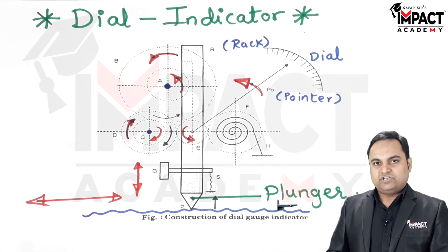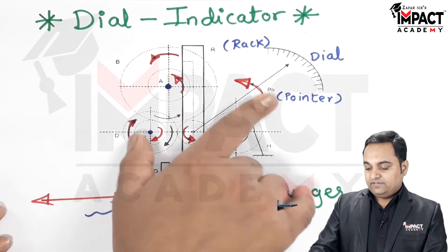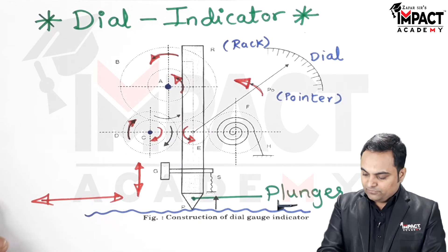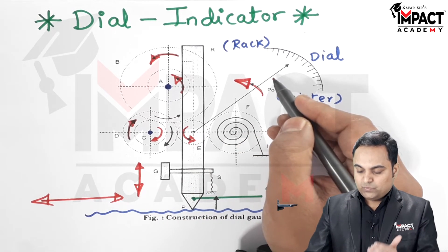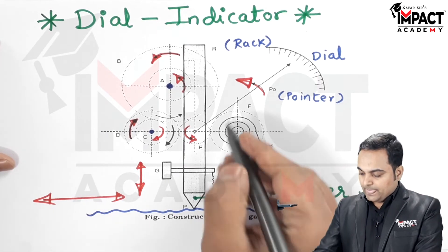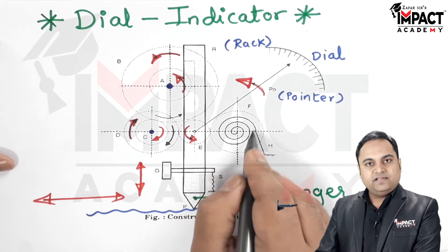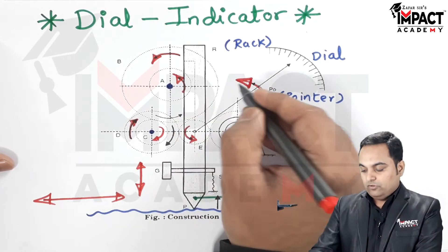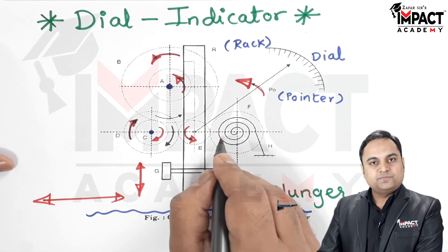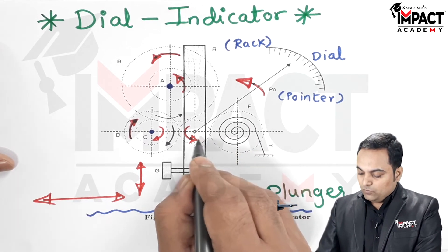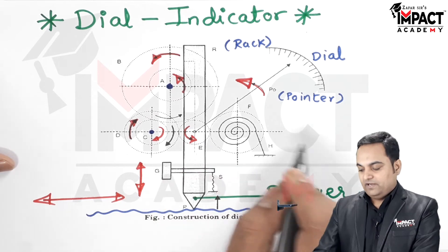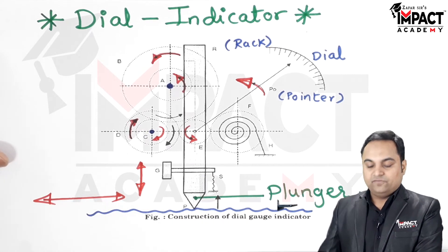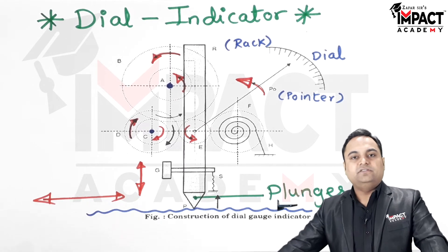The dial indicator is a gauge that gives us deflections — it doesn't give an absolute reading. Once the deflections have been noted, gear F carries the helical spring. The function of this helical spring is that after E has rotated and the pointer moves anti-clockwise, the spring releases energy to bring the pointer back clockwise to its original position. The spring also keeps the plunger always in contact with the rough surface.